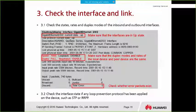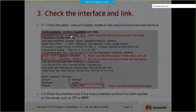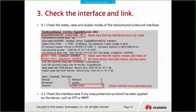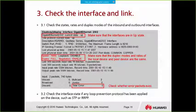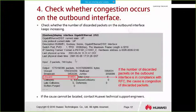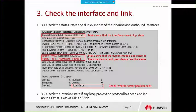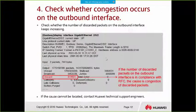Next, check the interface and link. Display the interface to check whether the status is up or down, then verify the speed, duplex mode, and negotiation mode — make sure they have the same duplex mode and same rate. Then check whether error packets exist.